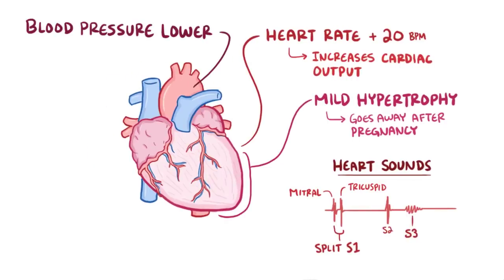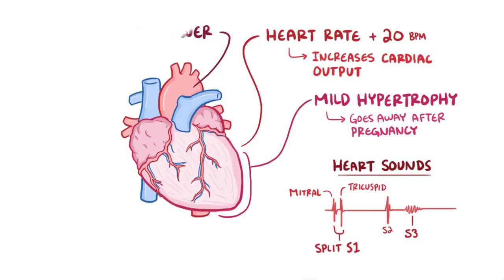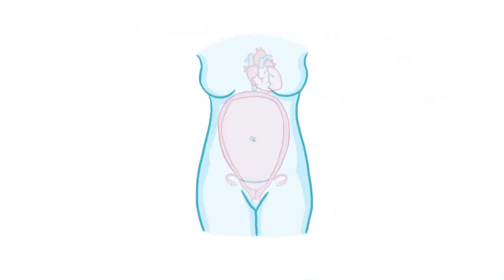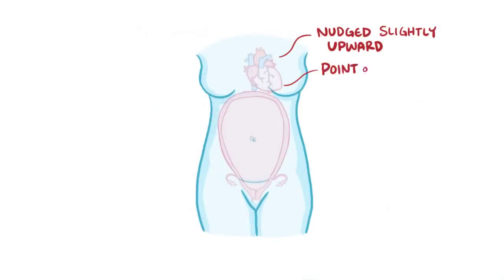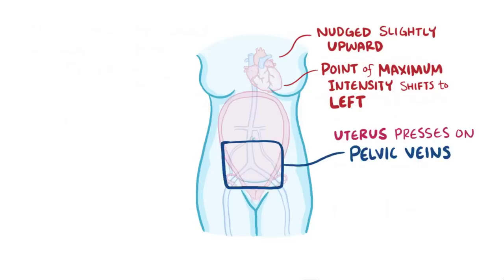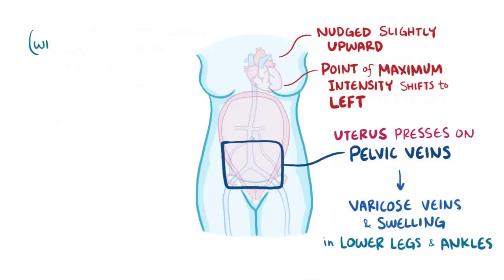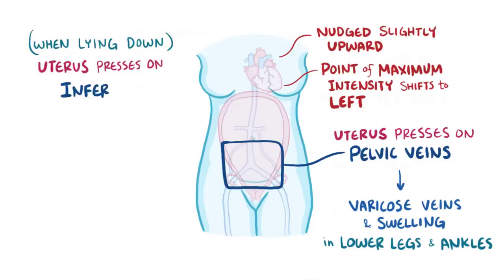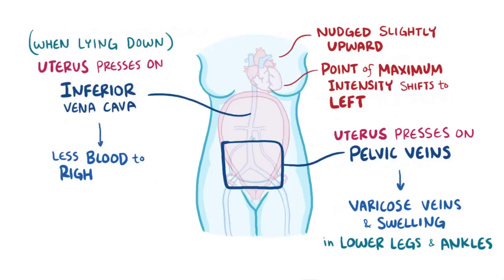The blood pressure actually falls a tiny bit, even though more blood is getting pushed through, since progesterone causes the vessels to dilate. As the uterus enlarges, it pushes up on the diaphragm, nudging the heart slightly upward and shifting the heart's point of maximum intensity a little bit to the left. The uterus also presses against the pelvic veins, causing blood to back up, leading to varicose veins as well as swelling in the lower legs and ankles. When lying down, the uterus presses on the inferior vena cava, reducing blood flow back to the right atrium and causing hypotension. A side-lying position or placing a pillow under the hip can help avoid that.